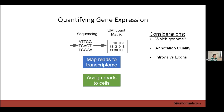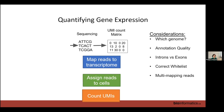After mapping, reads are assigned to cells using your whitelist, then UMIs are counted. Key considerations include how to deal with multimapping reads — if a read maps to multiple genes, which gene do you count it for? — and how to handle sequencing errors in UMIs, where two UMIs differing by one base pair mapping to the same gene might represent one molecule with a sequencing error.